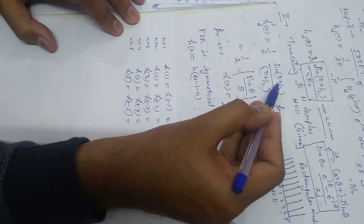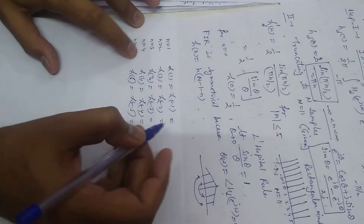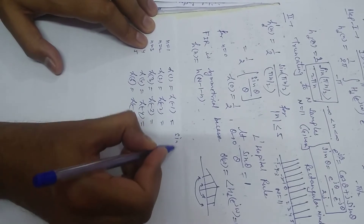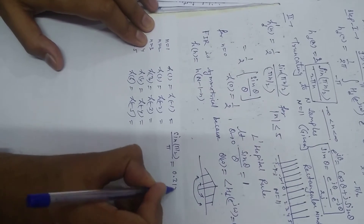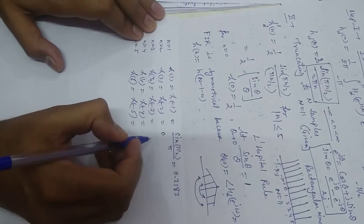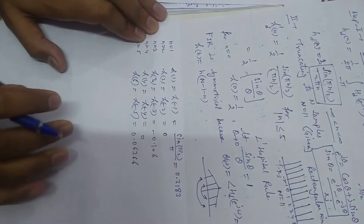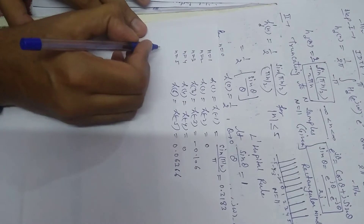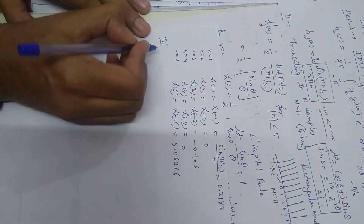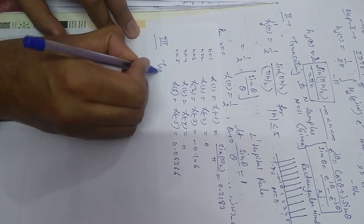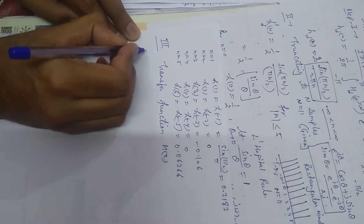These values come from sin(πn/2) / (πn/2) × (1/2). Putting n=1,2,3,4,5: for n=1, h(1) = 0.3183; for n=2, h(2) = 0 (since sin π = 0); for n=3, h(3) = −0.1060; for n=4, h(4) = 0; for n=5, h(5) = 0.06366. Step 3: calculate the Z-transform, i.e., the transfer function H(z).